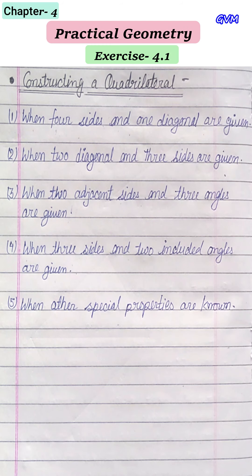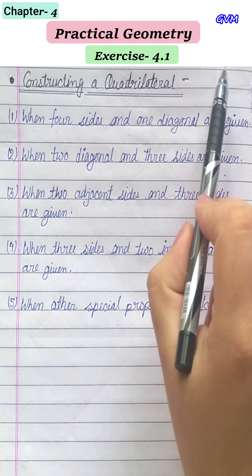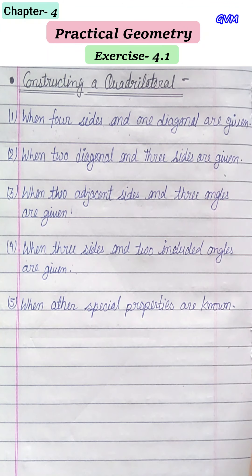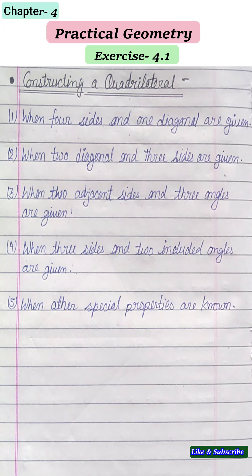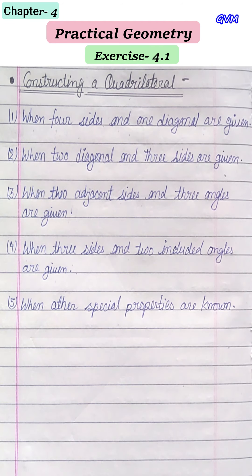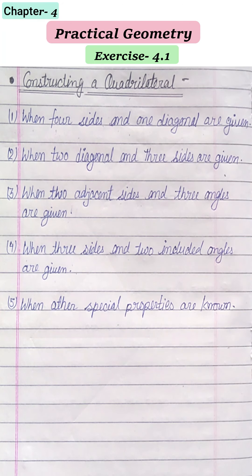Hello students, today we are going to discuss Chapter 4: Practical Geometry. Geometry is a branch of mathematics where we learn about points, lines, shapes, curves, space, etc. In this chapter we are going to learn about how to construct quadrilaterals. A quadrilateral is a polygon that has four sides.